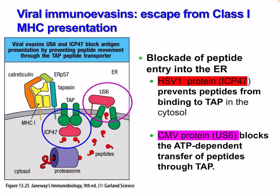Viral immunoevasion strategies that escape class 1 antigen presentation: blockade of peptide entry into the ER — Herpes Simplex Virus 1 protein ICP47 prevents peptides from binding to TAP in the cytosol, blocking TAP and disrupting the immune response. Cytomegalovirus blocks ATP-dependent transfer of peptides through TAP, so peptides cannot get through.